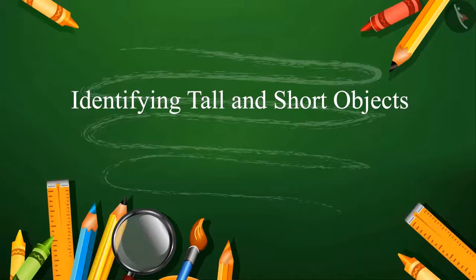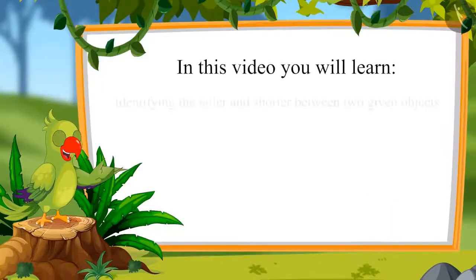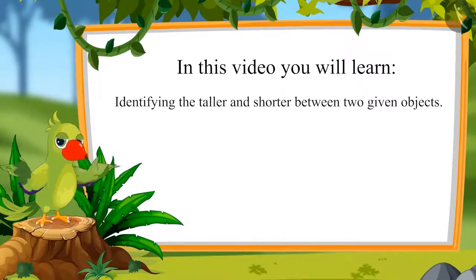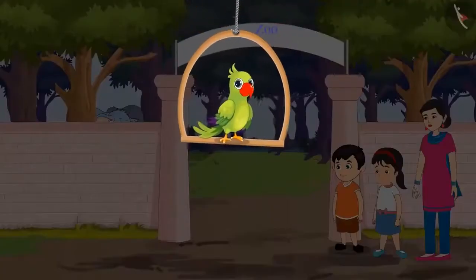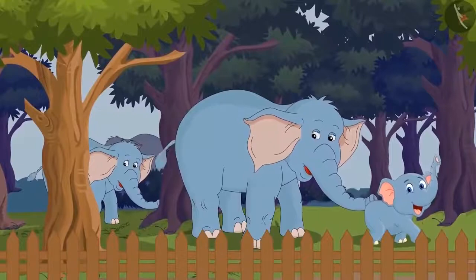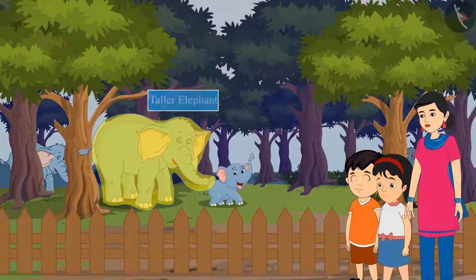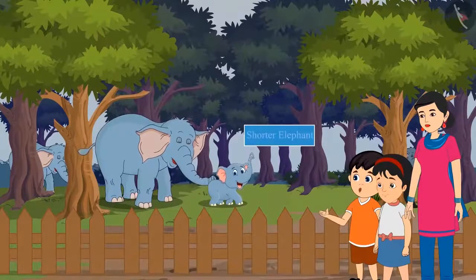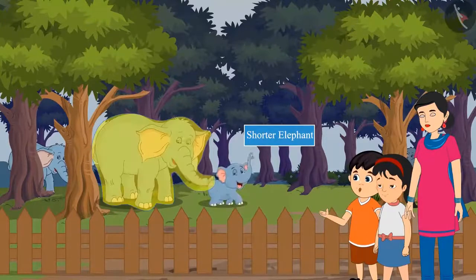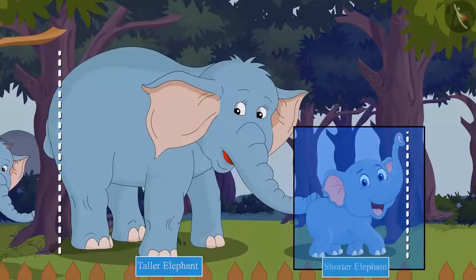Identifying Tall and Short Objects. Hello children, I am the parrot and I welcome you to this lesson. Today in this video, we will learn to identify the taller and shorter between two given objects. Today is a holiday for Chotu and Pinky — they have come to the zoo with their mother and saw several animals. First of all, they saw some elephants. Chotu says, 'Mommy, look how tall this elephant is!' Pinky notices, 'And how short is this elephant! It seems this shorter elephant is the child of this taller elephant.' The children confirm: this elephant is taller and this elephant is shorter.